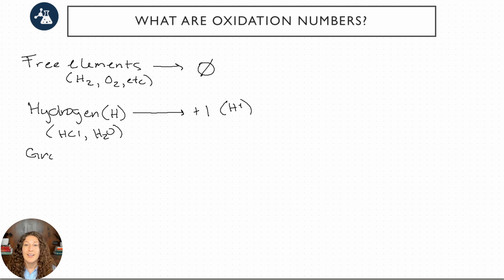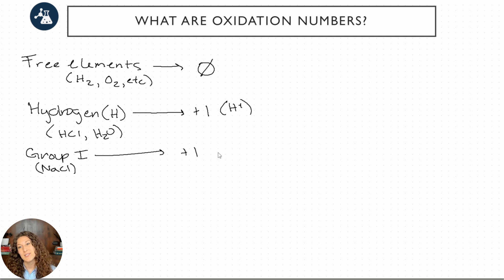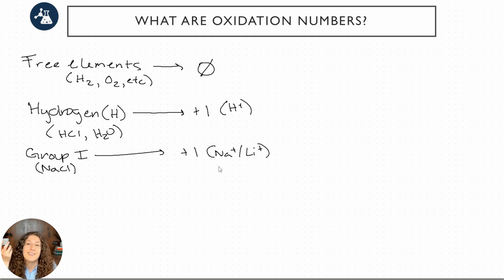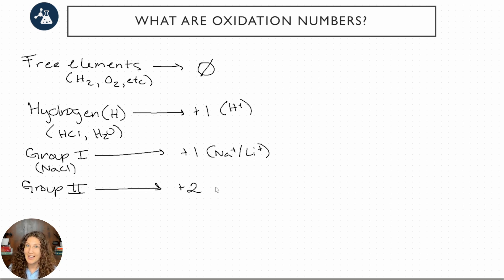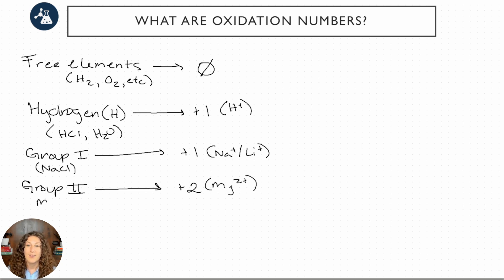The rest of the Group 1 elements are also plus one, because — like sodium in NaCl or lithium — these form monatomic cations: Na+ or Li+. Basically, whatever we would ionize to is our oxidation number. Group 2, as you might guess, has a plus two, because Group 2 loves to be a divalent cation. Think magnesium — Mg2+. When it's in a compound like MgCl2, it ionizes to form Mg2+, so it has a plus two oxidation number.